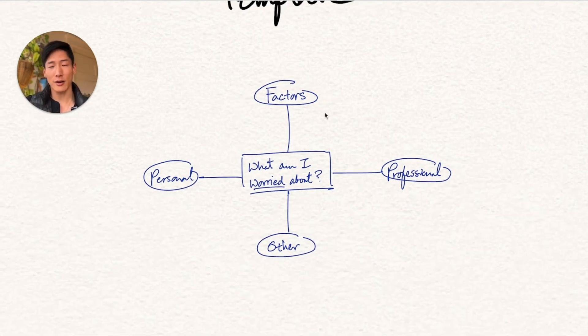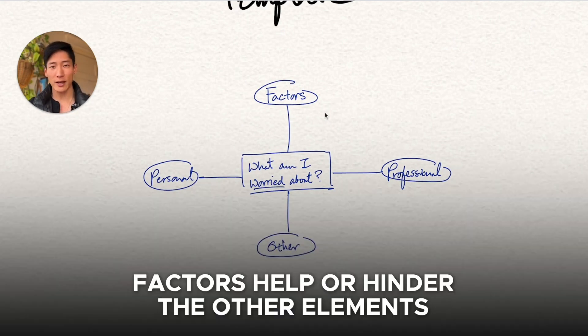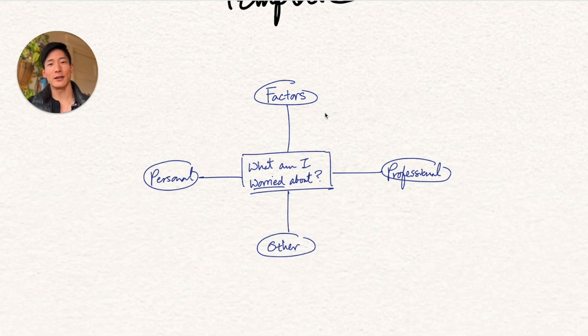And then finally, I've got factors. So these are more like reminders, values, routines, and stuff like that, that aren't exactly worries, but they can actually affect what's on my mind, what's on my plate. All this is going to make a lot more sense as we go through the example.